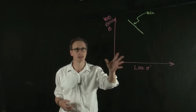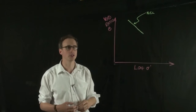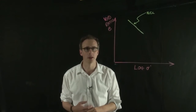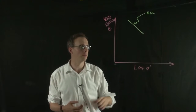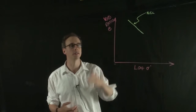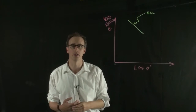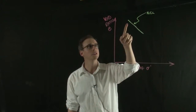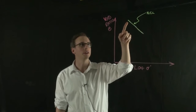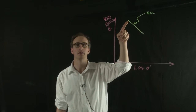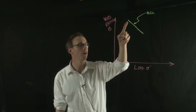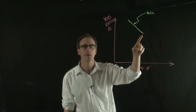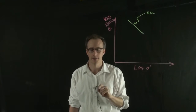What that means in terms of this consolidation test: if we have our log sigma prime axis on the x-axis and our void ratio on the y-axis, before we load a soil it might exist in a condition over here where we have a void ratio, and when we load it, the void ratio decreases down the normal compression line.